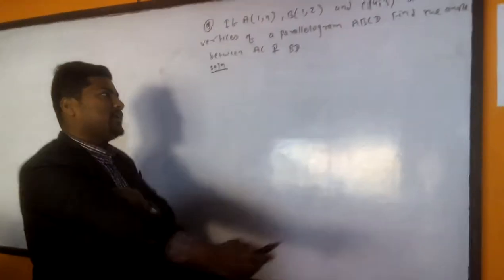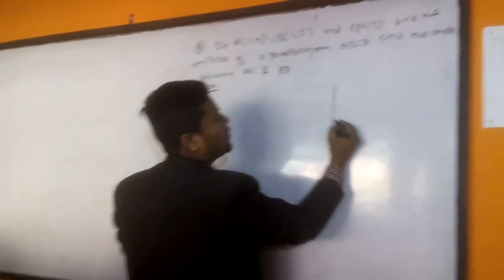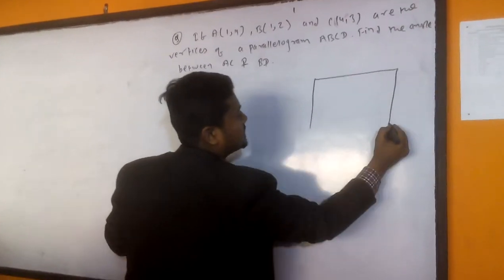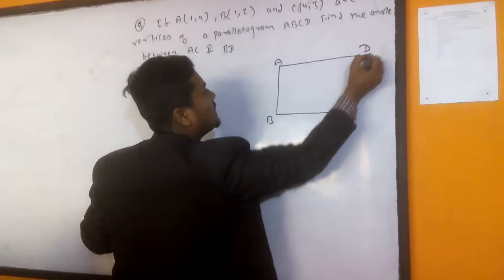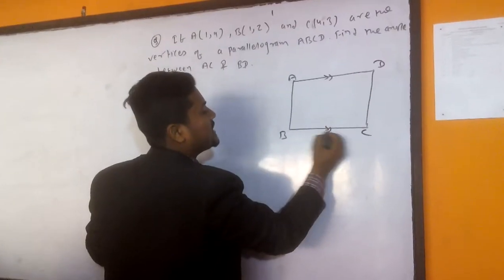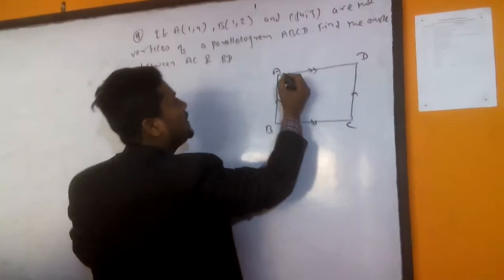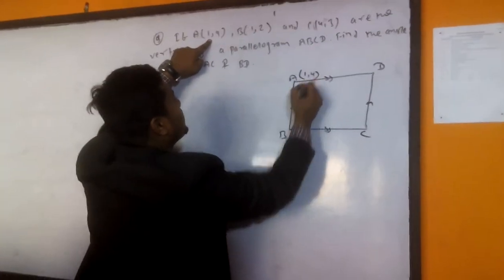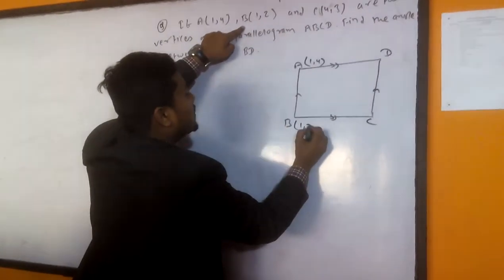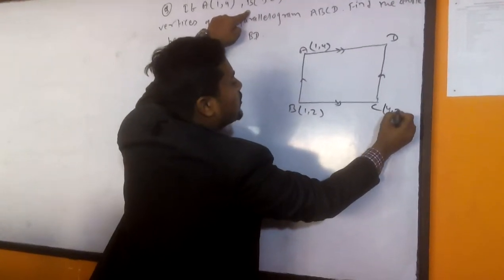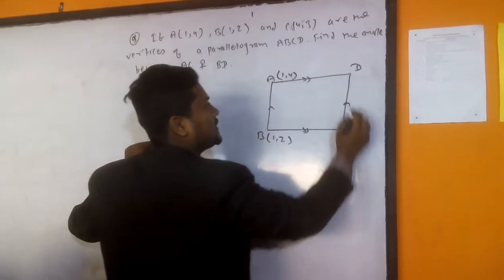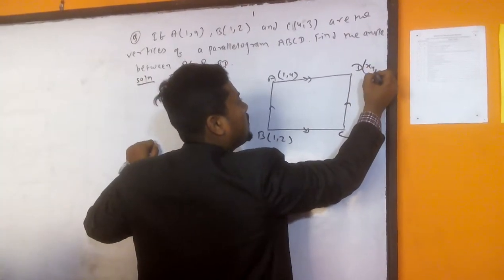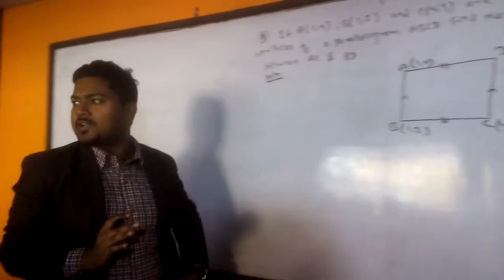Yes sir. Okay, don't worry. First of all, we will find out the coordinate D. Now, first of all, make this parallelogram like this: A, B, C, D. Parallelogram means opposite sides are parallel and equal. Okay, now tell me what is the vertices of A? 1 comma 4. Coordinate of B? 1 comma 2. C? 4 comma 3. We don't know this. Then X1, Y1, X2, Y2, X3, Y3, then we can say X4 and Y4.